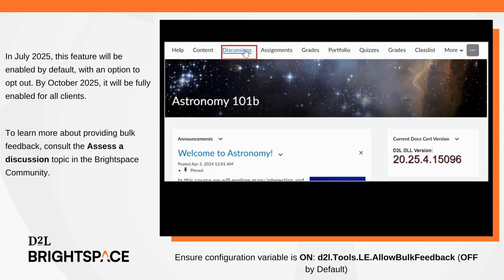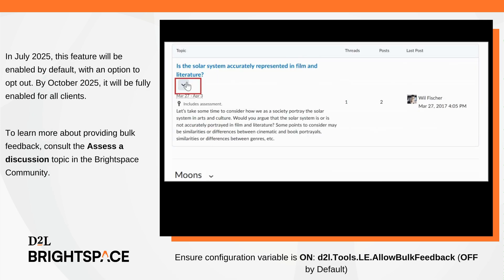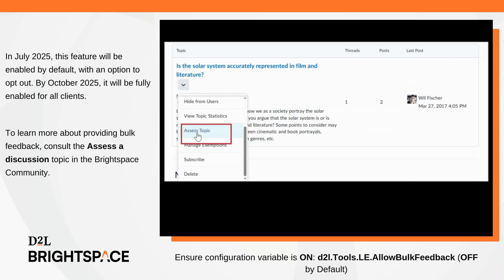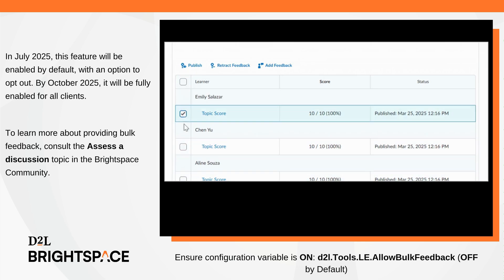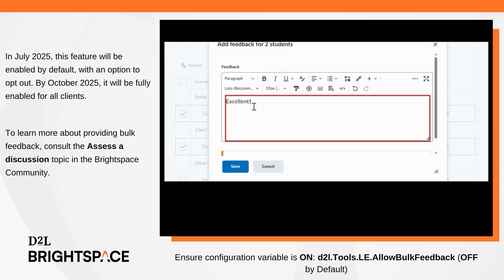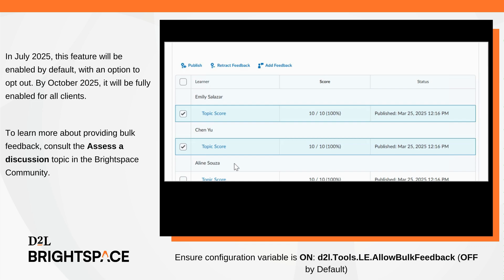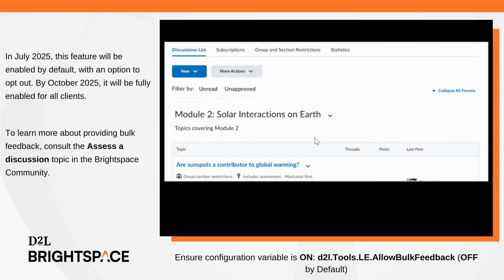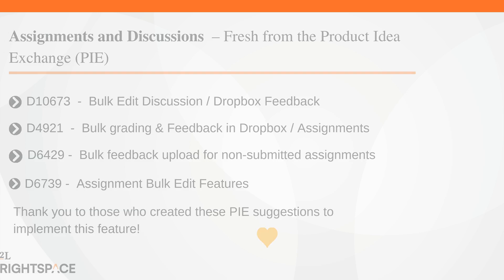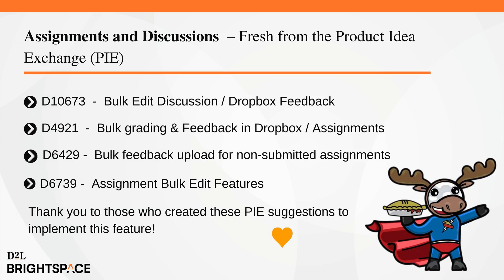This feature is available to all clients and is controlled by the d2l.tools.le.allowBulkFeedback configuration variable, which is set to off by default. In July 2025, this will be enabled by default with an option to opt out. By October 2025, it will be fully enabled for all clients and the config variable will be removed. To learn more about providing bulk feedback, consult the Assess a Discussion topic in Brightspace Community. This feature implements the following PI items: D10673, Bulk Edit Discussion/Dropbox Feedback.